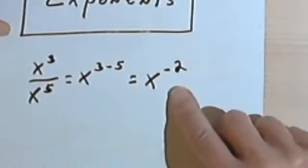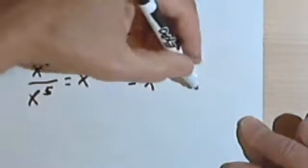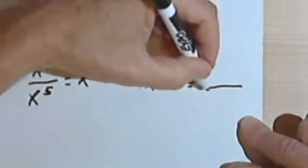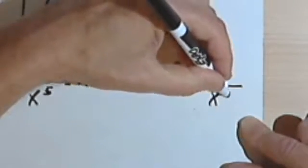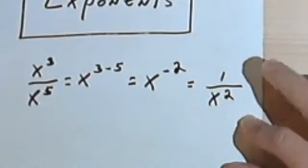And then our rule for negative exponents is going to tell us to take this x to the negative 2, make it the denominator of a fraction with the sign changed, and just put a 1 in where we need a numerator.